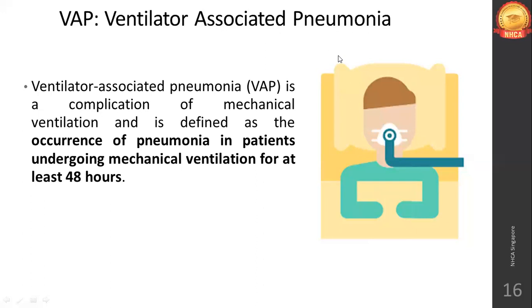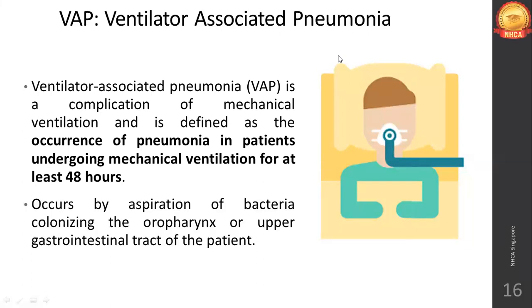Most bacterial nosocomial pneumonia occur by the aspiration of bacteria. You already have a colony of bacteria in your oropharynx and even in your upper GI tract. Certain colonies of bacteria are present, but when you aspirate them — when they get into the trachea — they will start colonizing the lungs. That's when you get pneumonia.